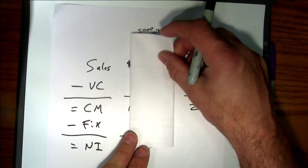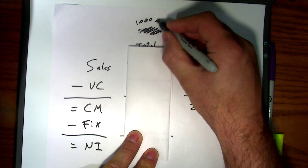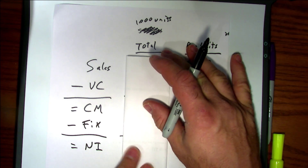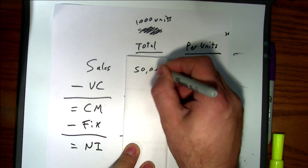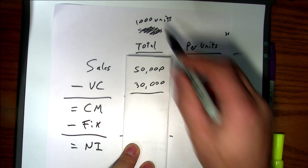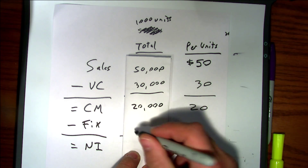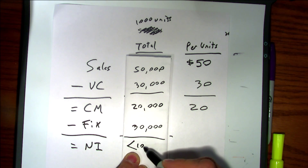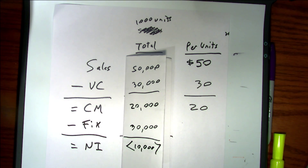What if I asked you to recast this at one thousand units? Sales would be fifty times one thousand equals fifty thousand. Variable costs would be thirty times one thousand equals thirty thousand. Contribution margin: twenty times one thousand equals twenty thousand. Fixed costs are still thirty thousand. So we have a bottom line that's negative — a loss of ten thousand. You should be able to recast that easily.